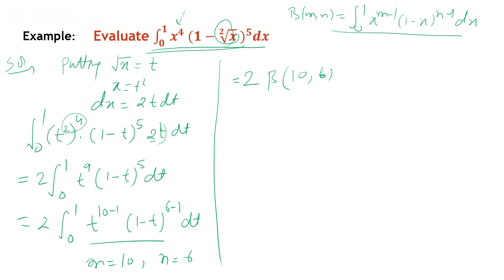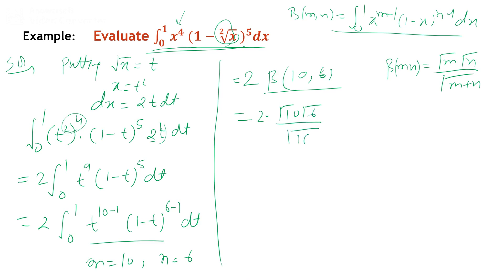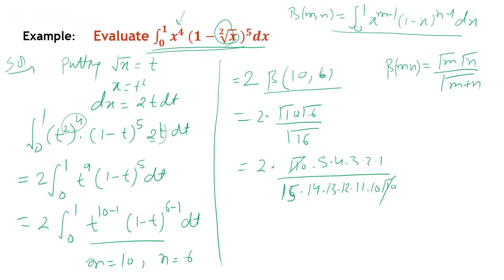Writing t^9 as t^(10-1) and (1-t)^5 as (1-t)^(6-1), we compare with the beta function to get 2·β(10, 6). Using the relation with gamma: β(10,6) = Γ(10)·Γ(6) / Γ(16). Expanding and cancelling Γ(10), then simplifying, we get the value 1/1501 — wait, simplifying the factorials gives 1/1510... the result simplifies to 1/1510 approximately.